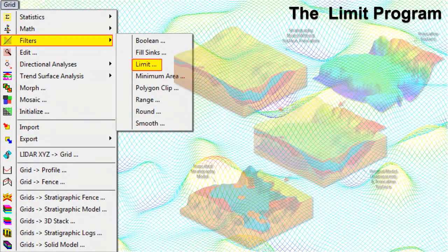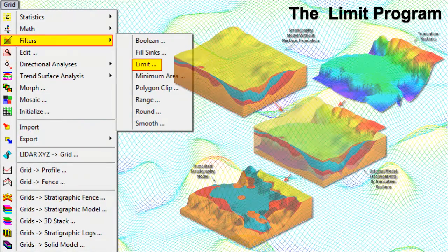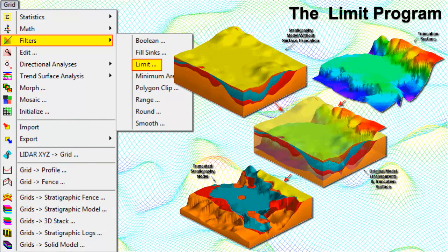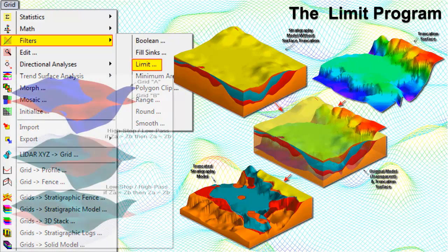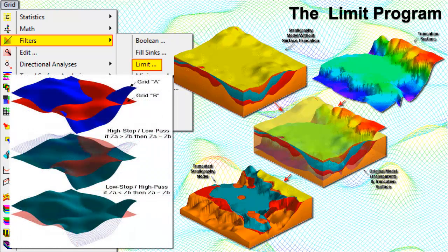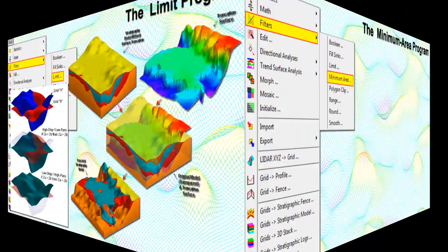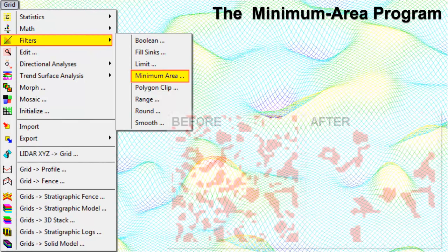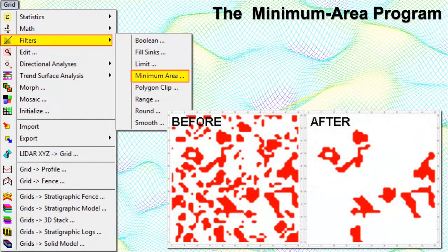The Limit program compares the Z value of each node of an existing grid model to the corresponding node in another comparison grid model and reassigns lower or higher nodes to the values in the comparison grid. In this manner, you can, for example, constrain a stratigraphic surface to another stratigraphic layer or to the ground surface. You can invoke either a low-stop or a high-stop filter.